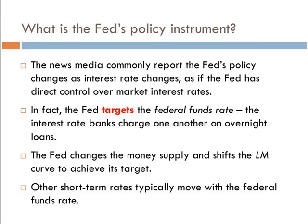Banks loan each other money all the time. Bank one calls bank two and says, 'I need $50 million for 24 hours' — bank two lends it at the Fed Funds Rate. A few days later, bank two calls bank one and needs $50 million back. This interbank, often overnight, rate is called the Federal Funds Rate in the United States because it's the Federal Funds Market.